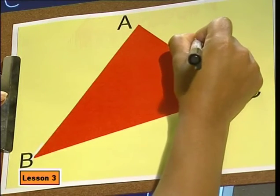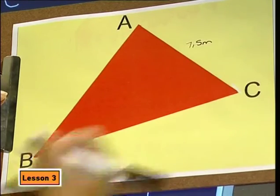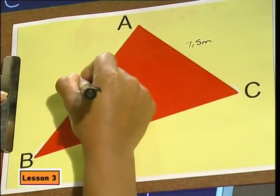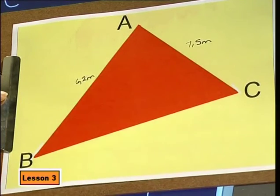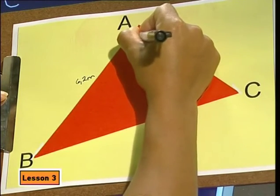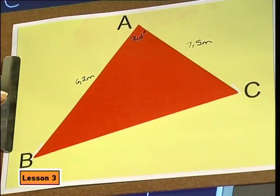Okay, so here's the triangle A, B and C. AC is 7.5. AB is 6.2. And the angle here at A is 74.6. And let's put a question mark here on BC because that's what we're looking for. Now it doesn't look so difficult.